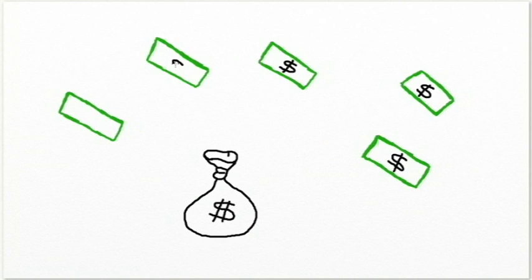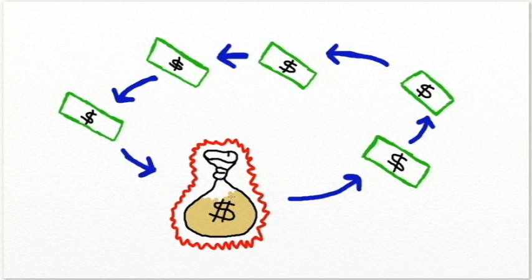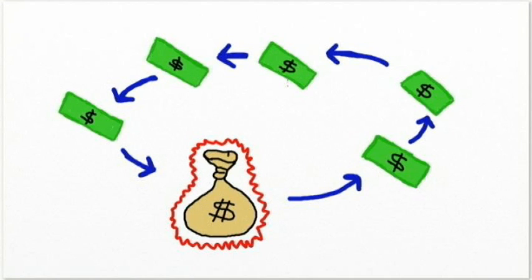The Martingale system, like almost all betting systems, gives you several small victories in exchange for the occasional big time loss. Roulette has a house advantage, and there's absolutely no legal way to overcome or even reduce that house advantage. Plenty of minds greater than mine or yours have tried, and all have failed.